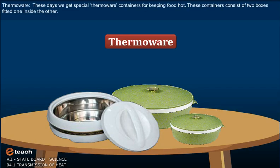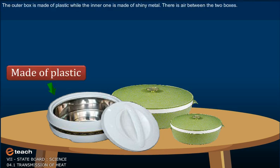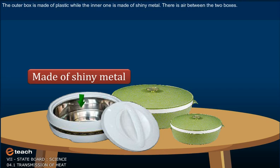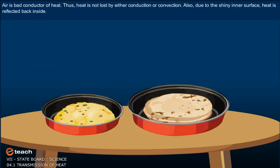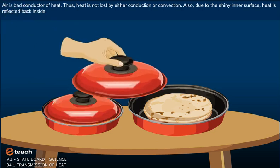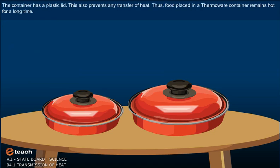Thermover. These days, we get special thermover containers for keeping food hot. These containers consist of two boxes fitted one inside the other. The outer box is made of plastic while the inner one is made of shiny metal. There is air between the two boxes. Air is a bad conductor of heat. Thus, heat is not lost by either conduction or convection. Also, due to the shiny inner surface, heat is reflected back inside. The container has a plastic lid. This also prevents any transfer of heat. Thus, food placed in a thermover container remains hot for a long time.